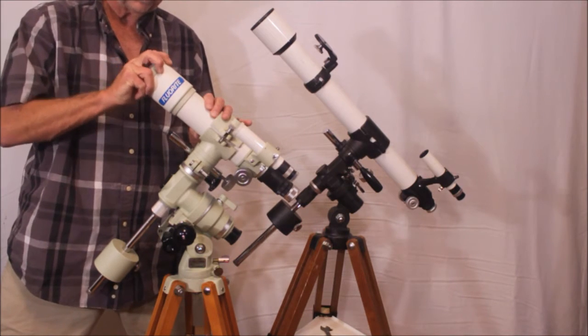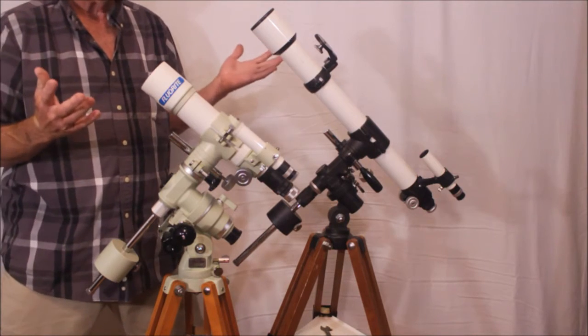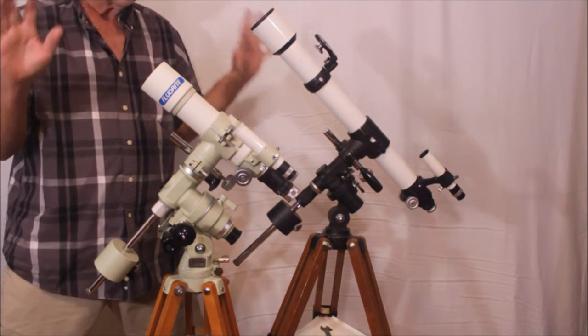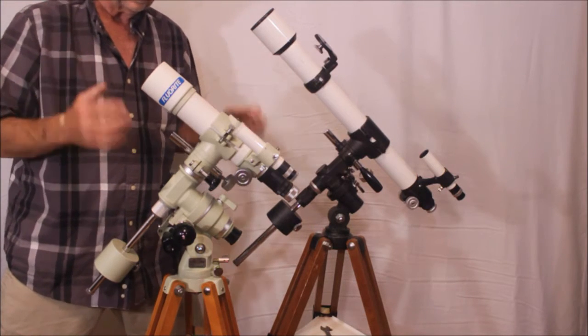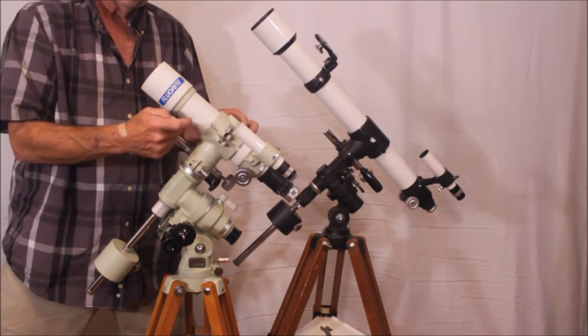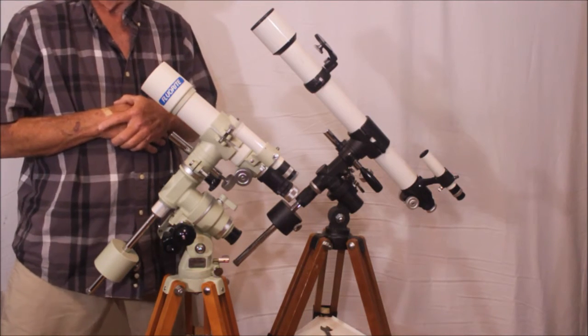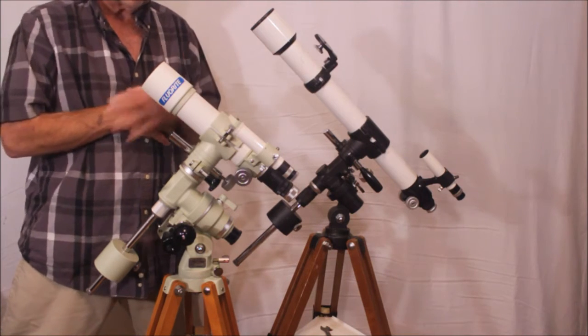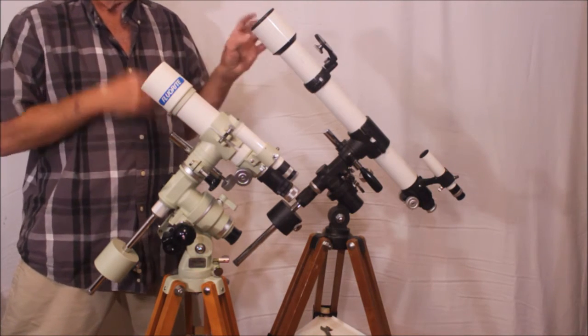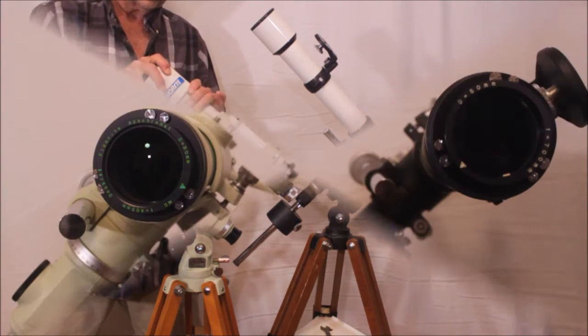Both of these are 50 millimeter telescopes. But as with everything Takahashi, absolutely everything is perfect, superb quality. This is, of course, a fluoride telescope. This is not fluoride. This is a doublet, standard achromat I believe. No big deal about the basic lens design. It does have a collimatable cell, the same as this. And I'll show you a close-up of those things.